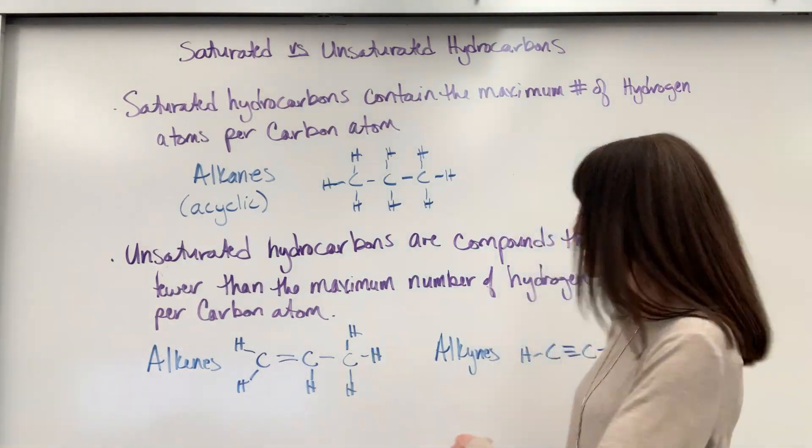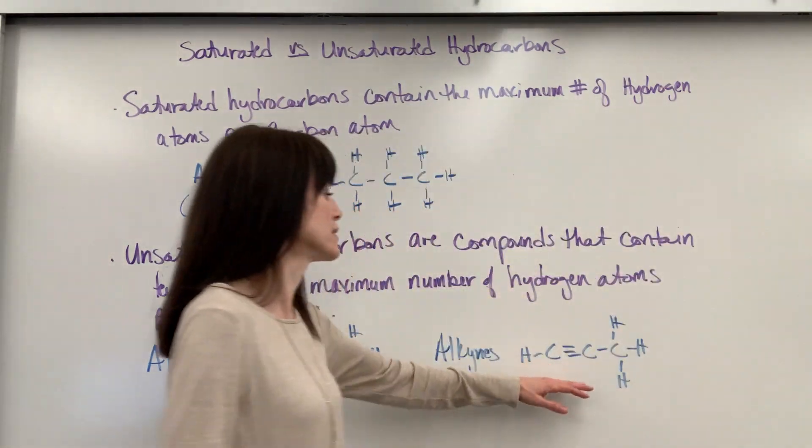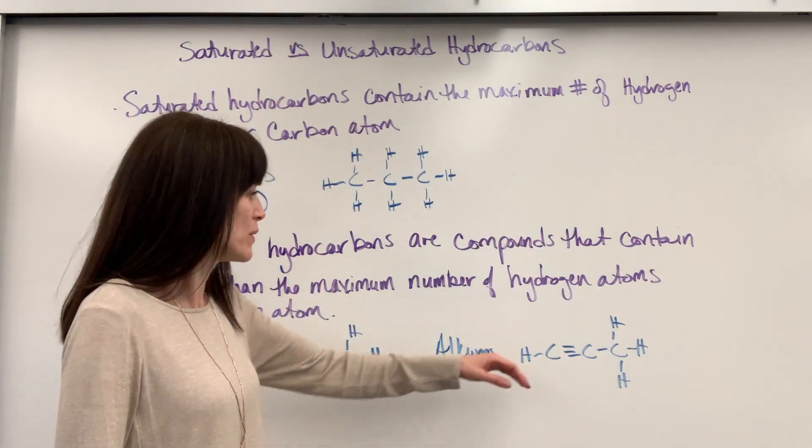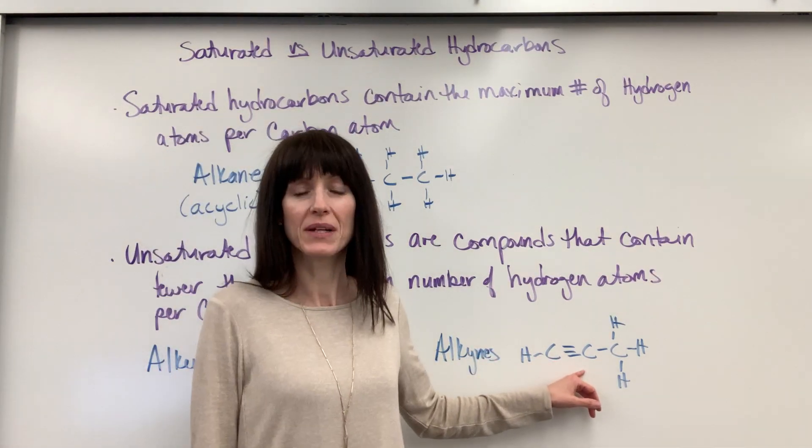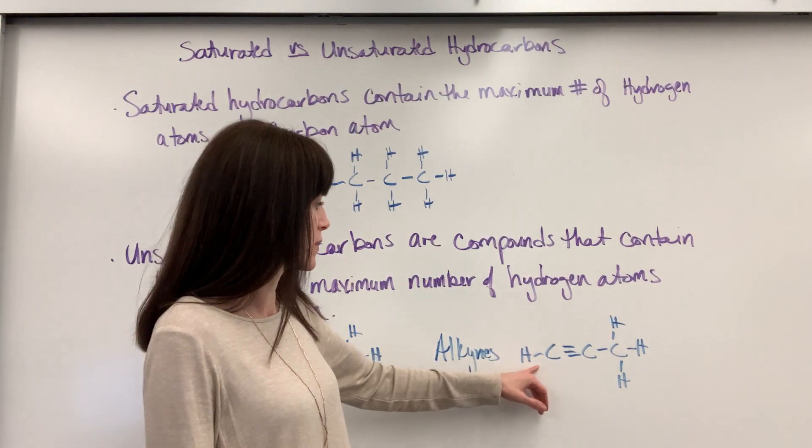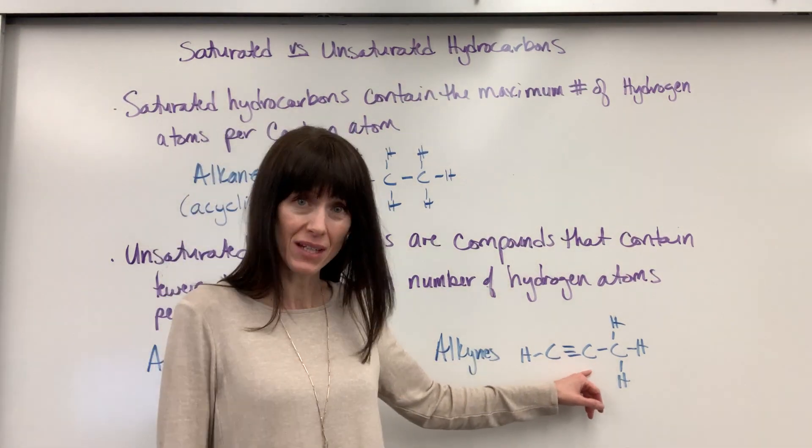Here's an example of an alkyne. So this would be a propyne. We've got a triple bond right there. And because of that triple bond, this carbon only has one hydrogen. That carbon doesn't have any hydrogens.